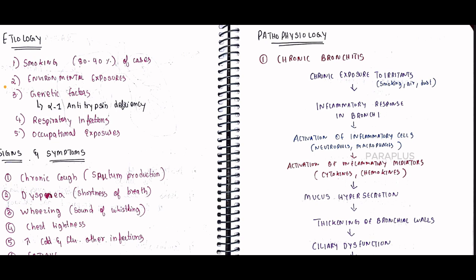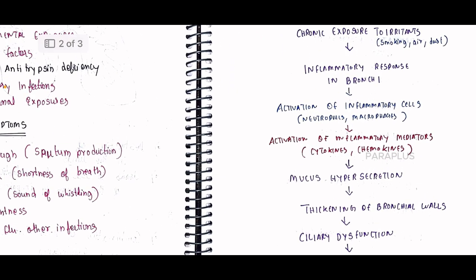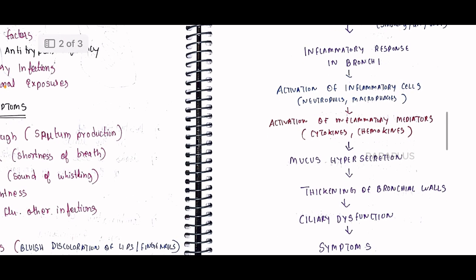In chronic bronchitis, chronic exposure to irritants triggers an inflammatory response in the bronchial branches. This leads to activation of inflammatory cells — neutrophils and macrophages.